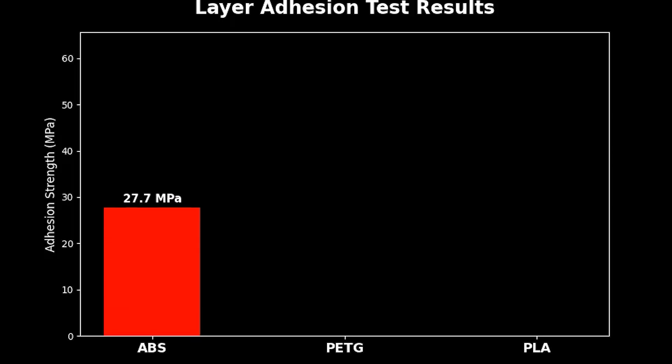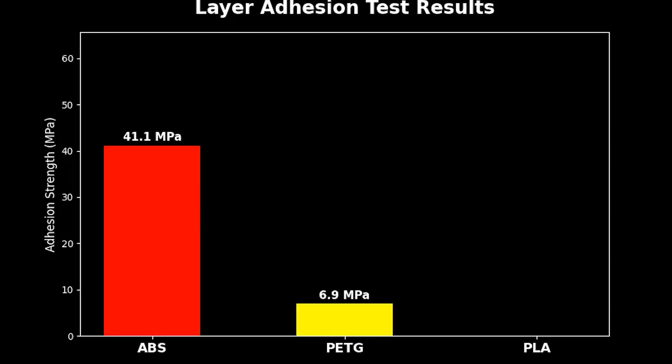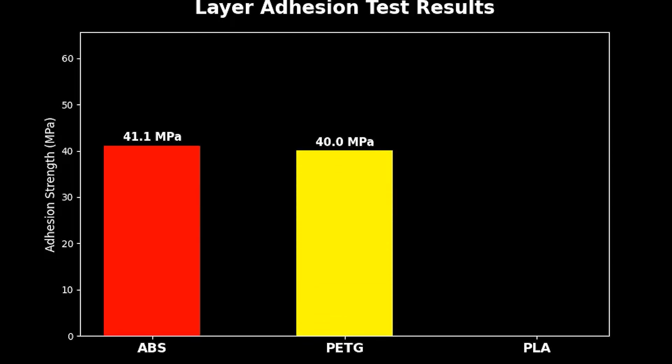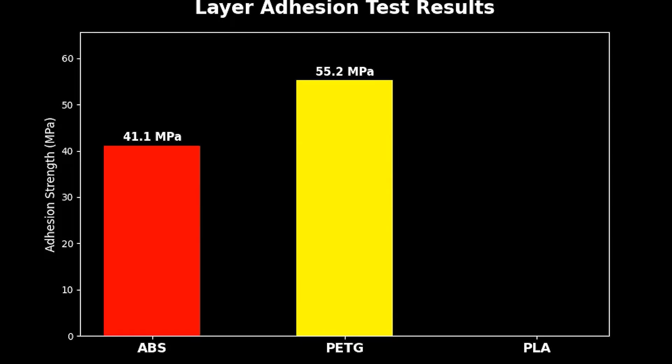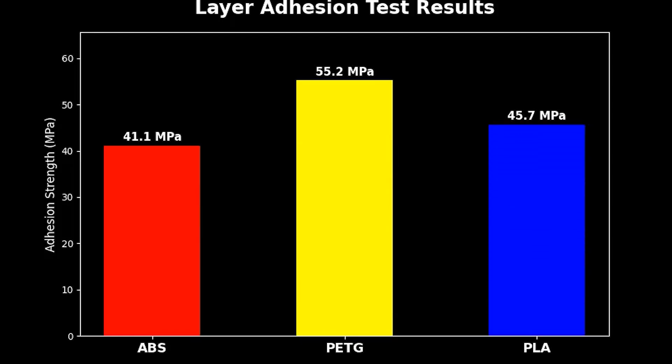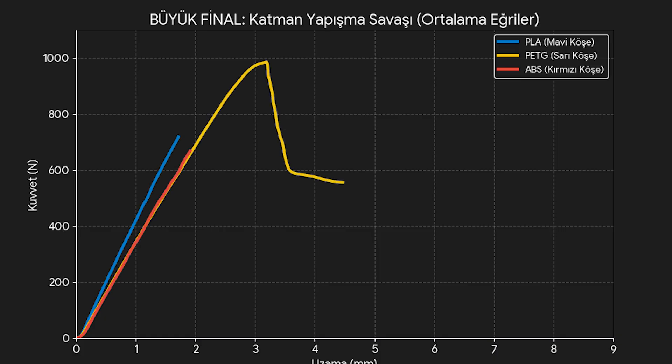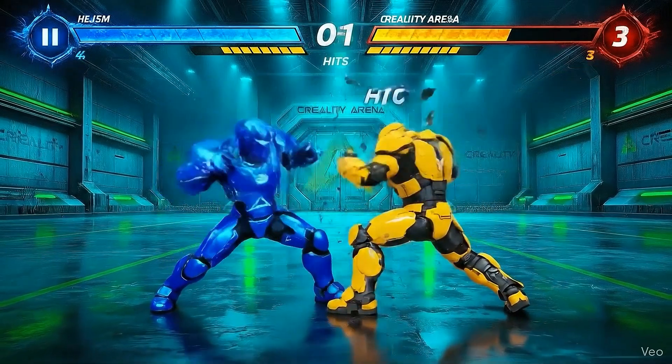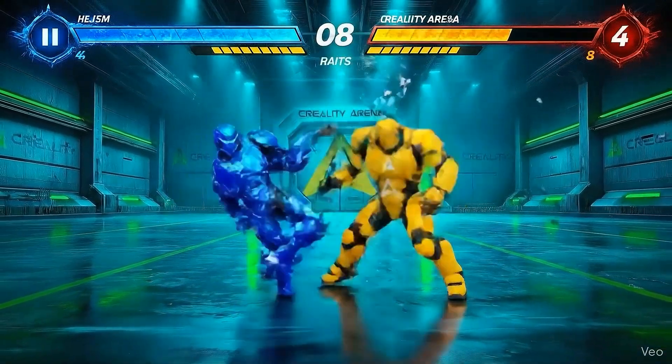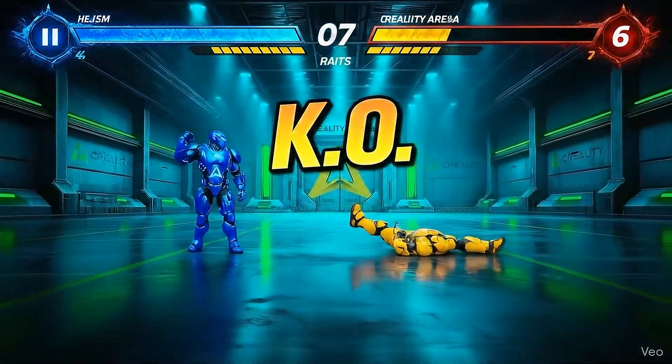ABS, kicked out of the table with 41.1. He is all alone now. But look at this war. With motherly affection, PETG scores 55.2. The loyal warrior PLA scores 57.1. The difference is not even two megapascals. A total photo finish. But in this arena, there is no room for emotions. Only numbers speak. The strongest bond, the head of the family, the king of layer adhesion, PLA.